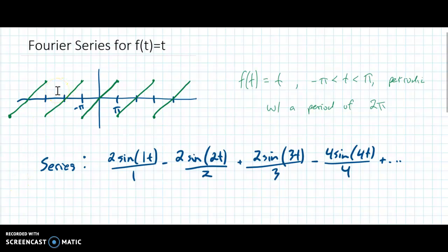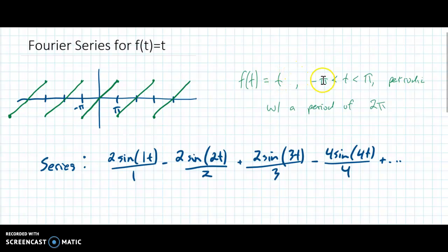This video should follow a couple other videos that I've asked you to watch. I'm going to do the calculations for the Fourier series for f of t equal to t. To be more specific, it is equal to t between negative pi and pi, and it's periodic with a period of 2 pi.